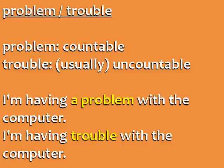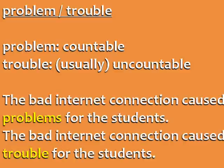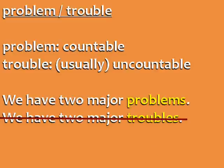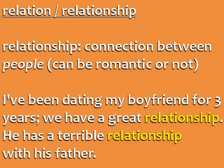Problem and trouble. Problem is countable and trouble is usually uncountable. I'm having a problem with the computer. I'm having trouble with the computer. The bad internet connection caused problems for the students. The bad internet connection caused trouble for the students. We have two major problems — don't say "we have two major troubles." Trouble can also be used as a verb: These test results are troubling me, meaning making me worried.